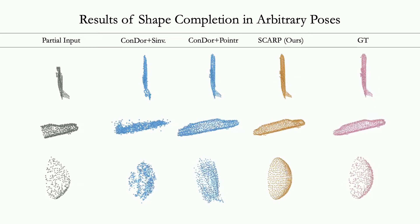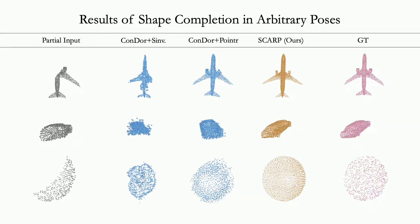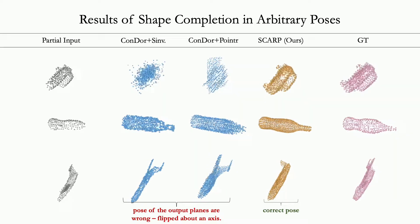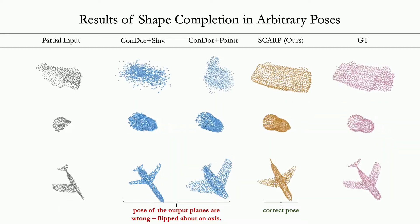As can be seen, SCARP is able to recover detailed full shape in the correct pose, whereas the baselines struggle to do so in many of the cases.